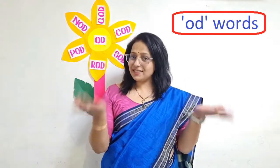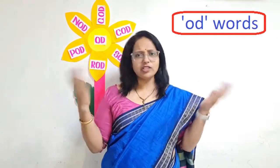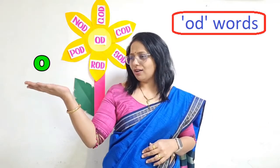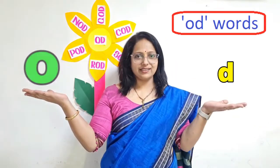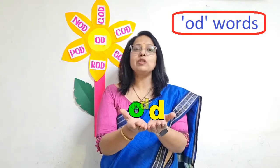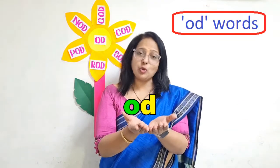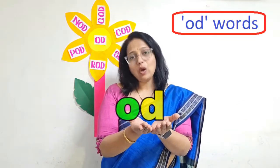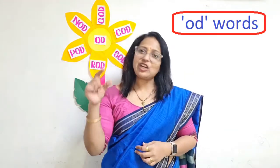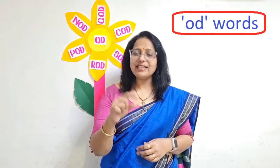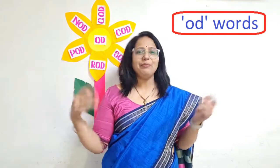Dear children, before we start, let us understand what is odd. O and D come together and become odd — O-D, odd. And we will add a consonant to it, so it will become a 3-letter odd word.